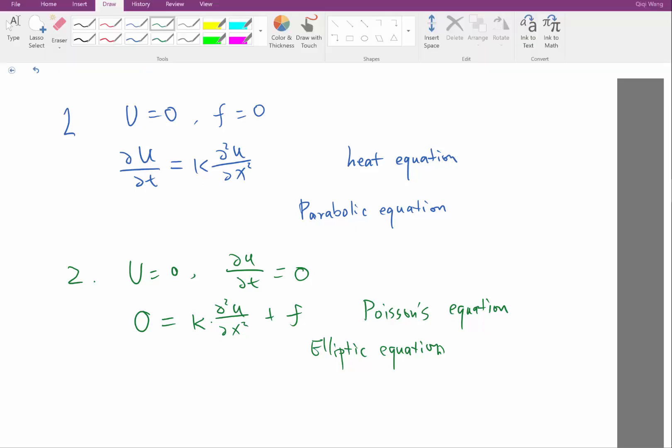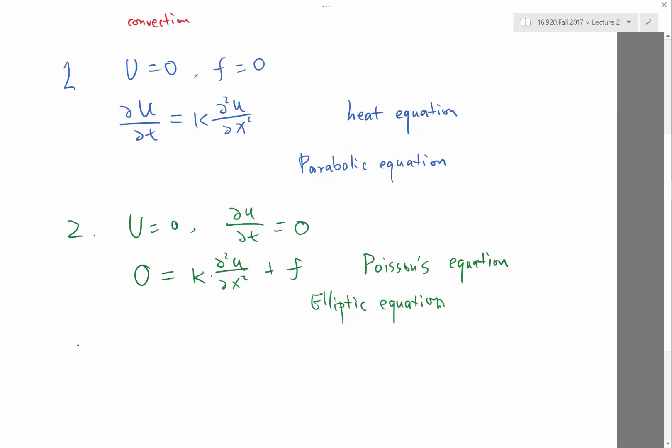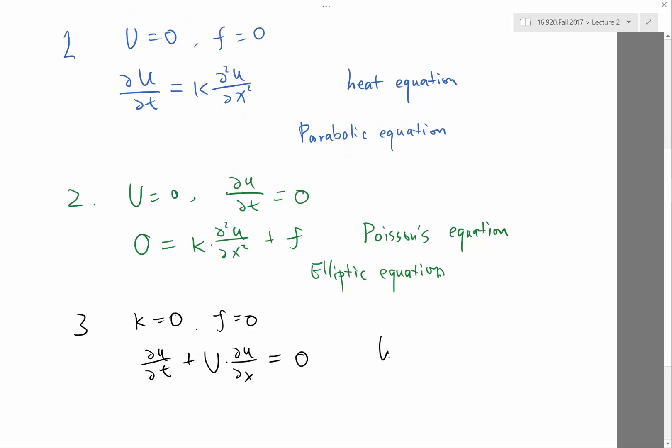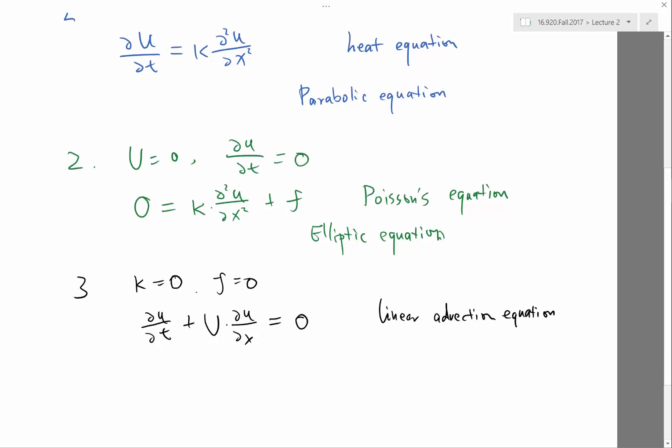The third example is instead of having U equal to zero, we set kappa equal to zero and f equal to zero. In this case, we get still a non-zero time derivative term, and the U term is no longer zero. This is actually the first example we demonstrated in the beginning of the lecture. What's the behavior of this equation? The solution almost remains constant but shifts either towards the right or towards the left. This is called the linear advection equation.